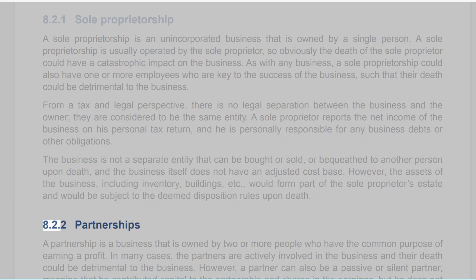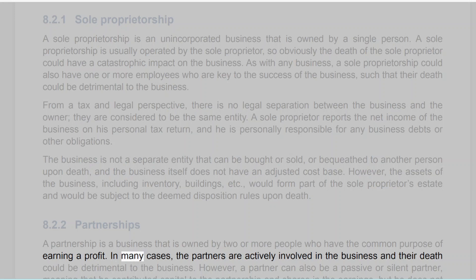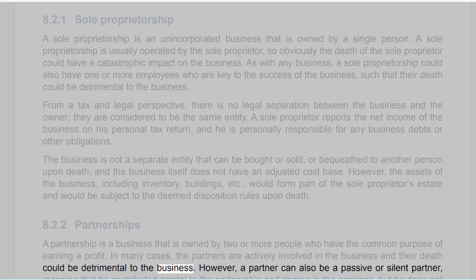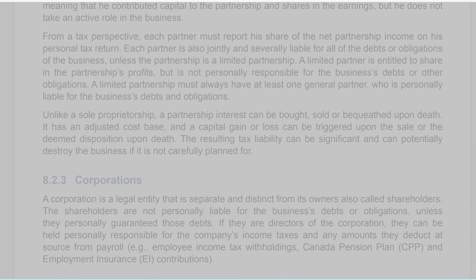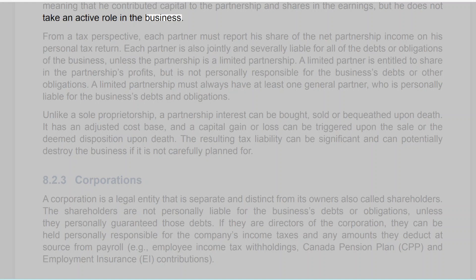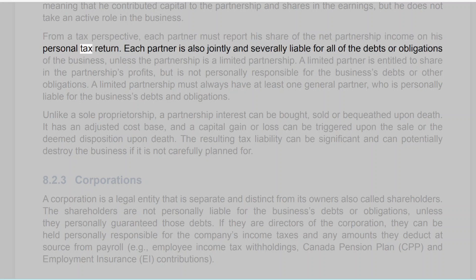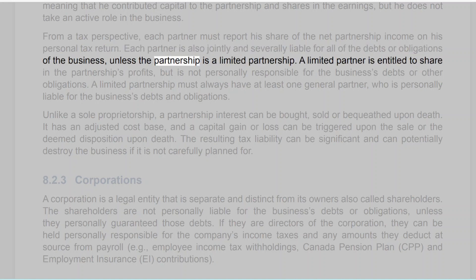8.2.2 Partnerships. A partnership is a business that is owned by two or more people who have the common purpose of earning a profit. In many cases, the partners are actively involved in the business, and their death could be detrimental. However, a partner can also be a passive or silent partner, meaning that he contributed capital to the partnership and shares in the earnings, but does not take an active role. From a tax perspective, each partner must report his share of the net partnership income on his personal tax return. Each partner is also jointly and severally liable for all of the debts or obligations of the business, unless the partnership is a limited partnership.